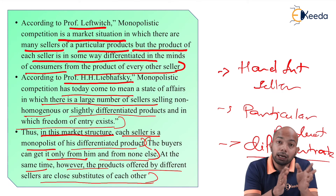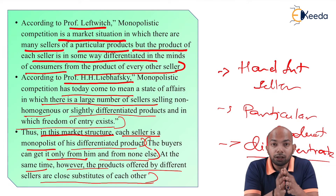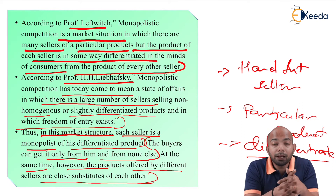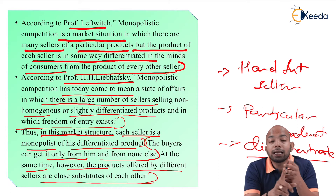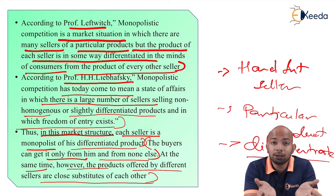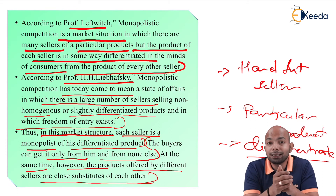If you're comparing two Bajaj Pulsar 220Fs, the only difference may be the color — rest everything remains the same. That is a homogeneous product. But if you compare the Bajaj Pulsar 220F with the Bajaj Dominar, the features are different — the CC, engine cubic capacity, bulk, and weight are all different. The specifications of the Bajaj Pulsar differ significantly from the Bajaj Dominar. Based on that, you figure out what exactly works for you.